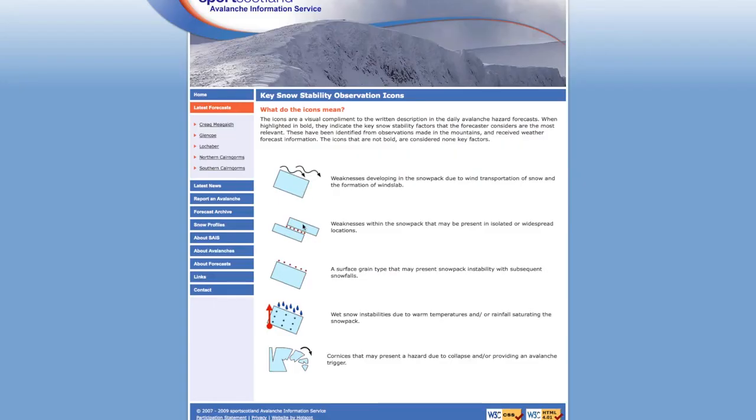The next level is weaknesses within the snowpack, and this really is quite key because that highlights any persistent weak layers. So it may not be very obvious when you're walking around and looking at the snowpack or looking at the mountains, but actually there may well be something developing underneath the surface, and this is a key one to identify.